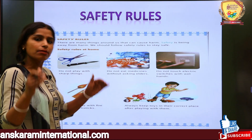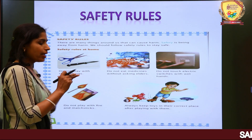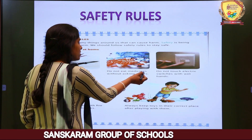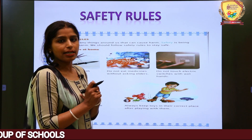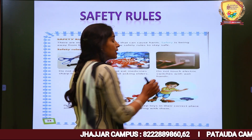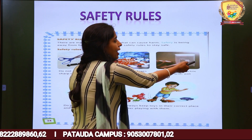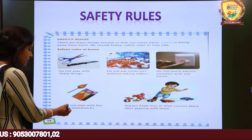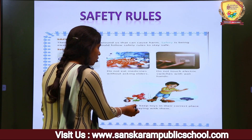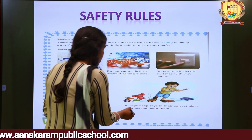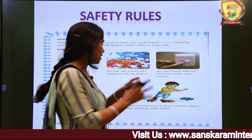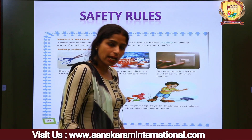Safety rules at home: Do not play with sharp things like scissors, pins, knives, etc. Do not eat medicines without asking elders — always get permission from mom and dad. Do not touch electric switches with wet hands. Do not play with fire and matchsticks. Always keep toys in their correct place after playing with them, otherwise someone could trip on them.